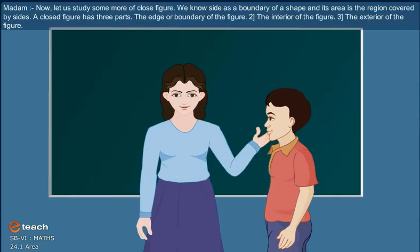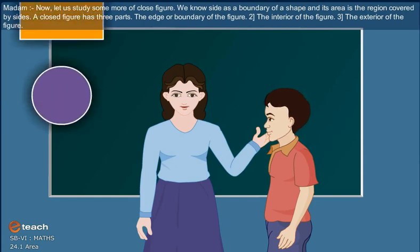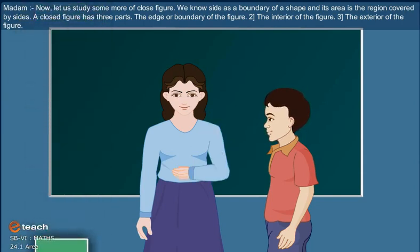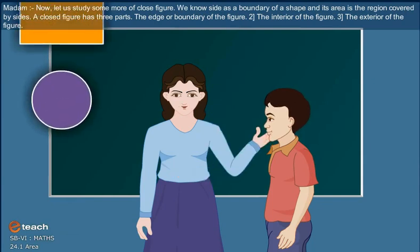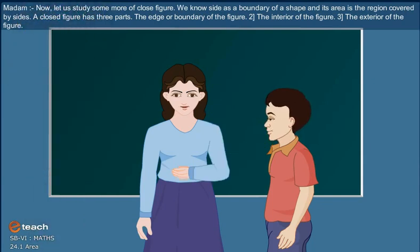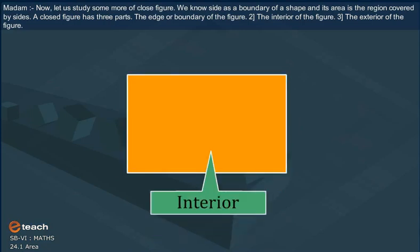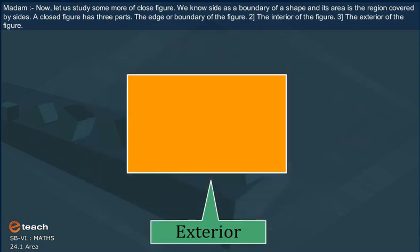Now, let us study some more closed figures. We know side as a boundary of a shape and its area is the region covered by sides. A closed figure has three parts: first, the edge or boundary of the figure; second, the interior of the figure; third, the exterior of the figure.